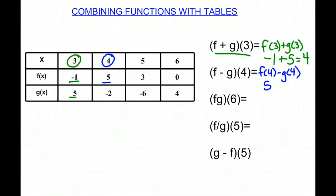And g(4) is negative 2. So we have minus a negative 2, which is actually plus 2, which is 7. So (f - g)(4) is a positive 7.